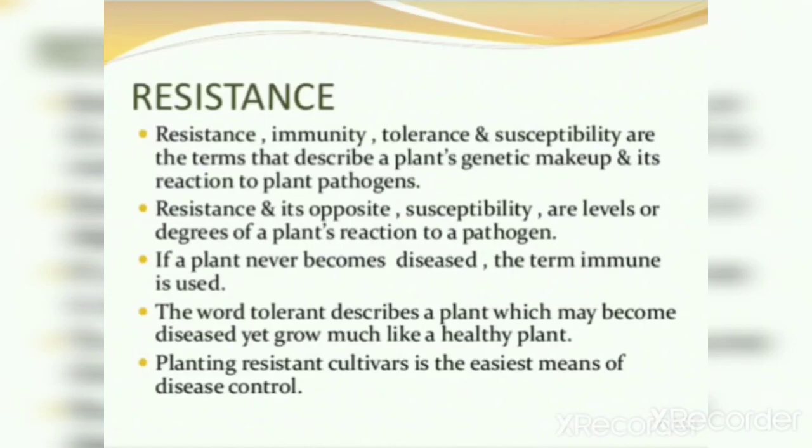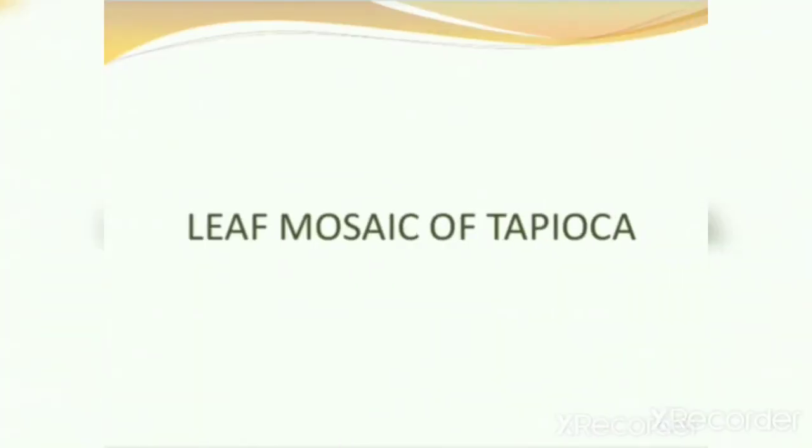If a plant never becomes diseased, the term immune is used. The word tolerant describes a plant that may become diseased yet still grows well. Planting resistant varieties is the easiest means of disease control.